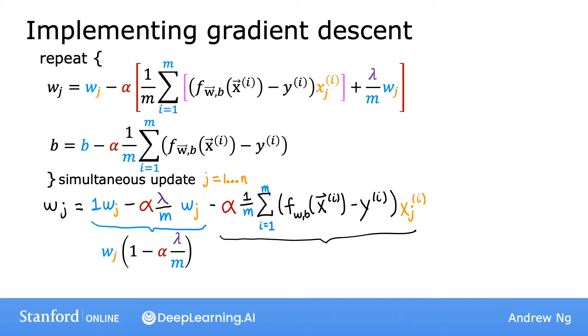And you might recognize this second term as the usual gradient descent update for unregularized linear regression. This is the update for linear regression before we had regularization. And this is the term we saw in week two of this course. And so the only change when you add regularization is that instead of w_j being set to be equal to w_j minus alpha times this term, it is now w times this number minus the usual update.